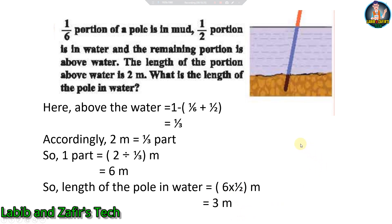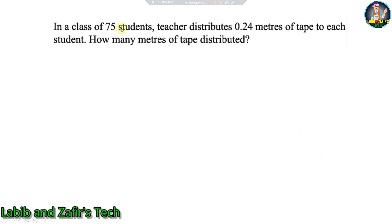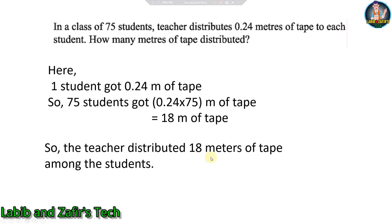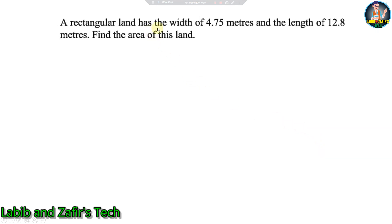Next problem: In a class of 75 students, the teacher distributes 0.24 meters of tape to each student. How many meters of tape are distributed in total? Solution: One student gets 0.24 meters, so 75 students get 0.24 × 75 = 18 meters of tape. The teacher distributed 18 meters of tape among the students.